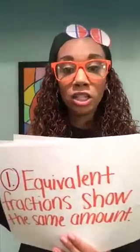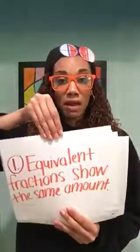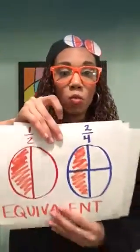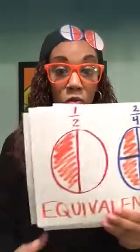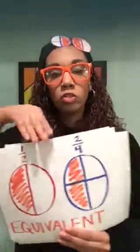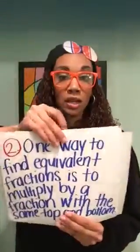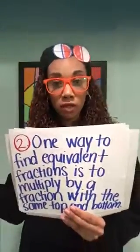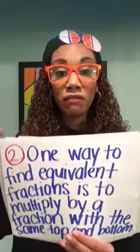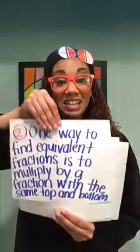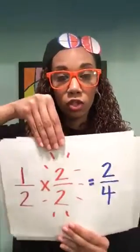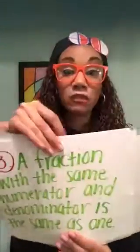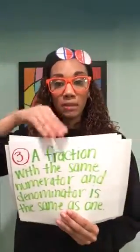Let's review. Number one, equivalent fractions show the same amount. Notice that one half and two fourths show the same amount — they're equivalent, which comes from the word equal, which means they're the same. Number two, one way we can find equivalent fractions is to multiply by a fraction with the same top and the same bottom. So in this one, we're multiplying by two halves, or two over two.